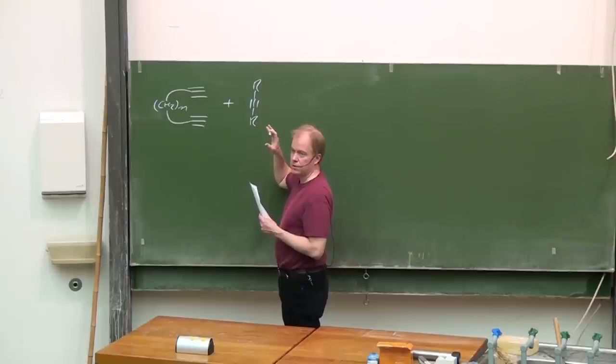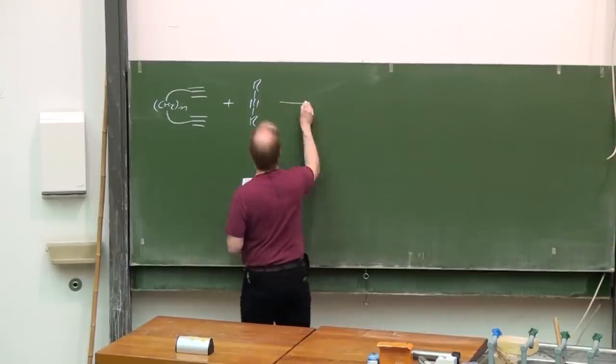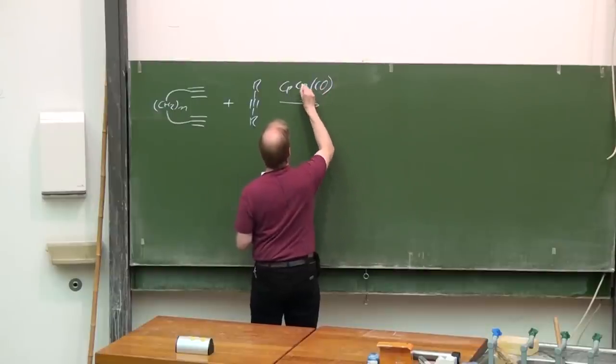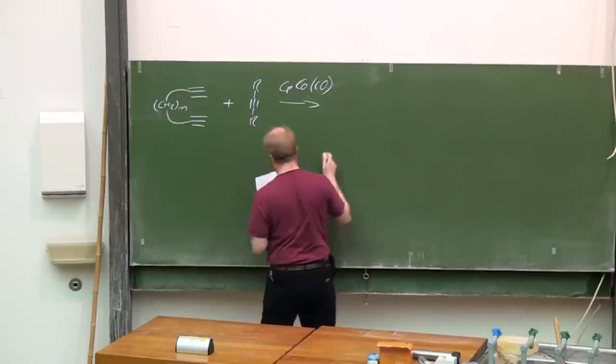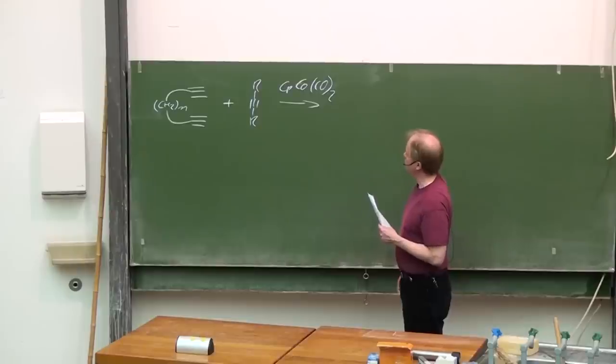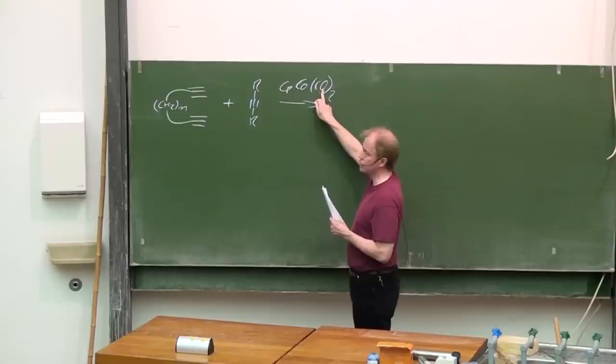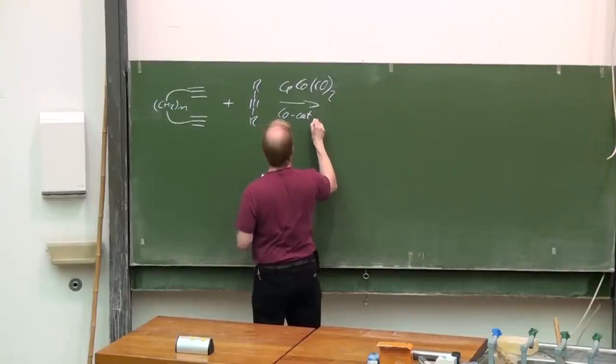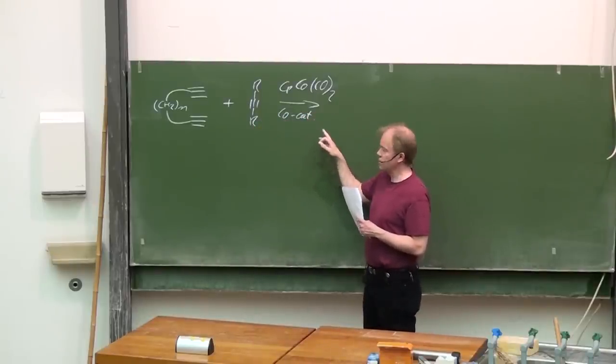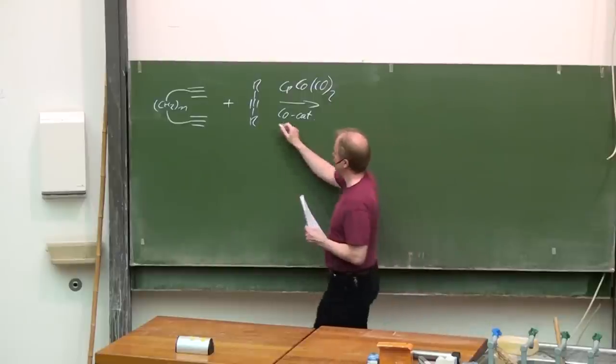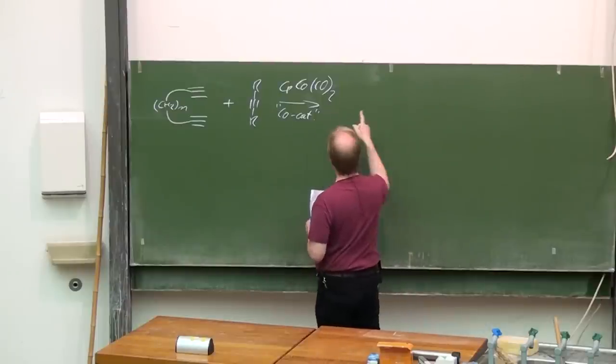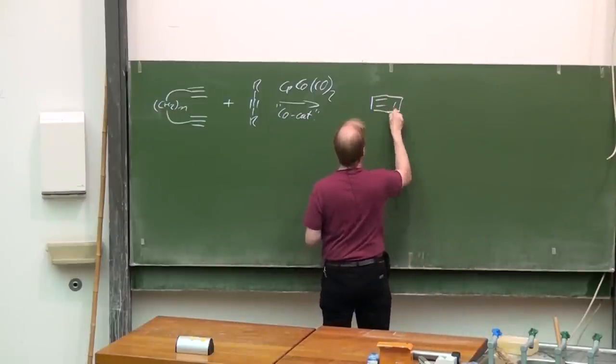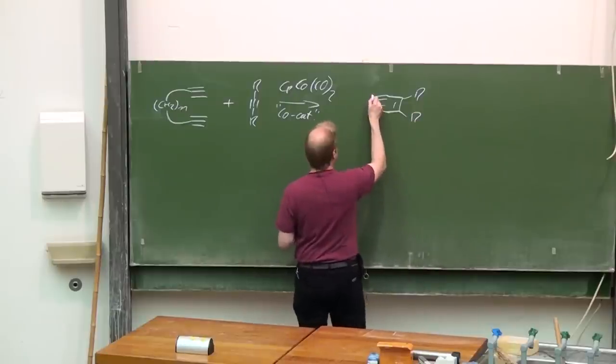...then the metallocyclopentadien... and here a cyclopentadienyl cobalt carbonyl complex is frequently applied. Keep in mind, this is carbon monoxide, here we have cobalt. And today, if I abbreviate that like this, it is not a co-catalyst, it's cobalt catalyst. What will be the result of the process we have discussed before? An annelated ring system is formed, an annelated benzene.